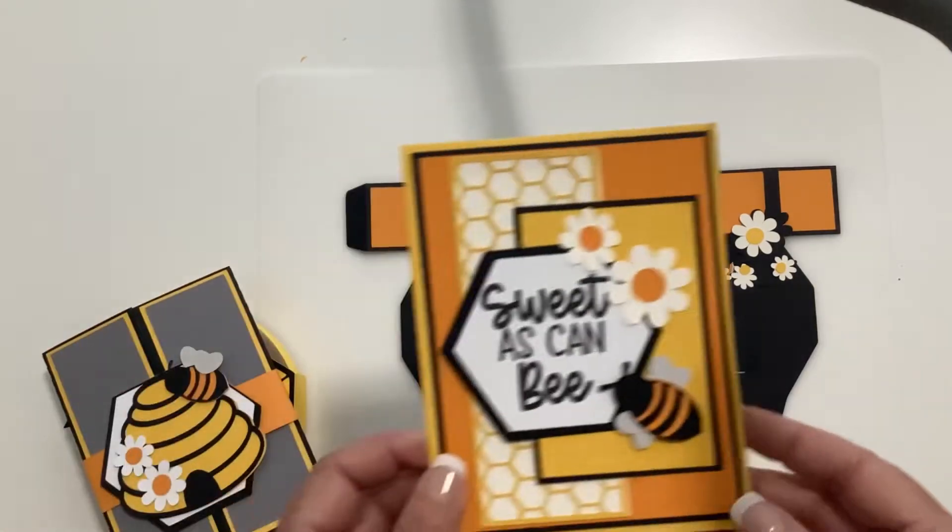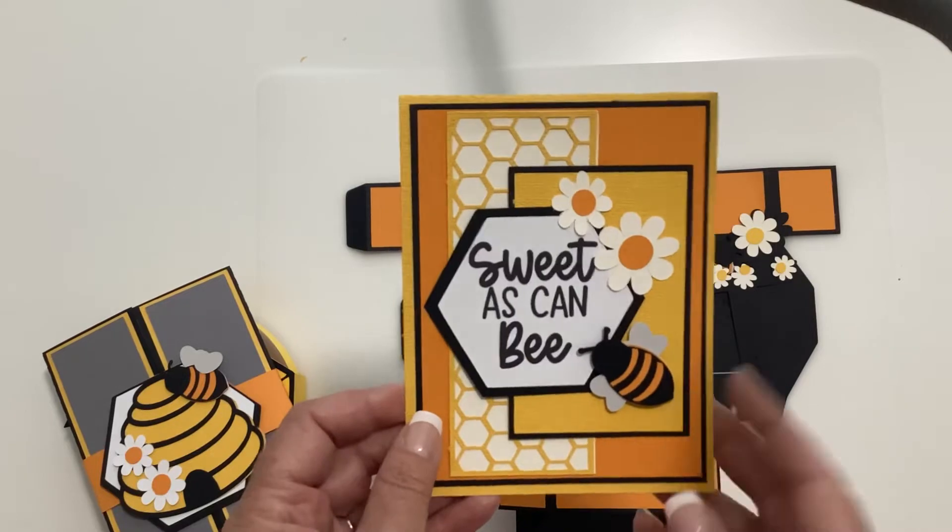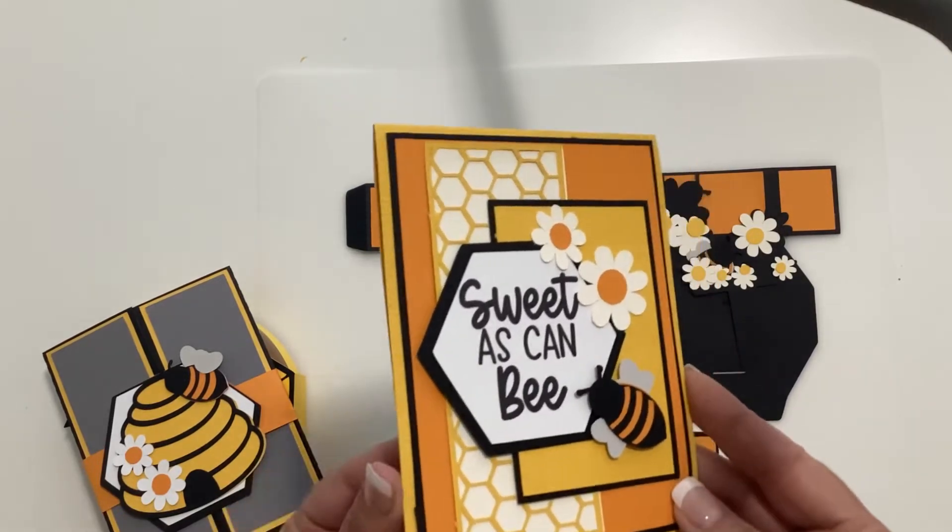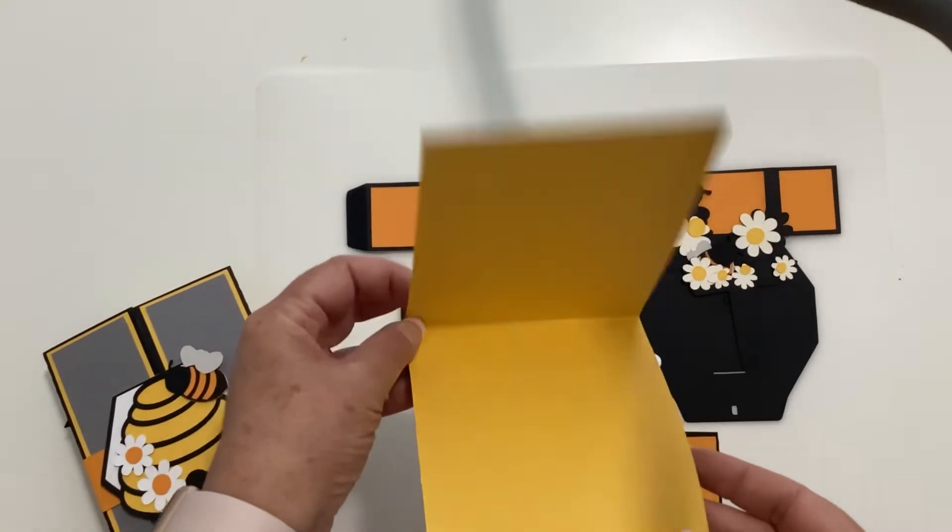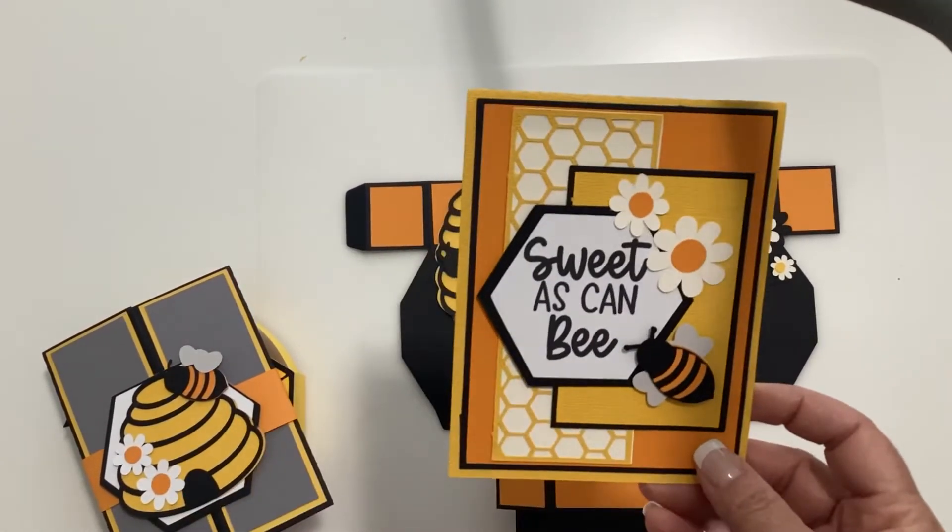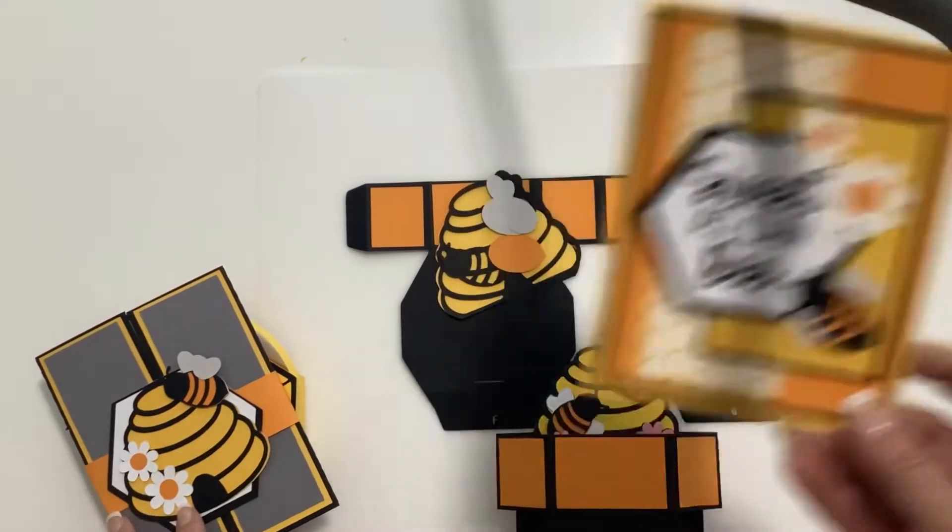Next up is a very simple A2 layered card. This is Sweet As Can Be. It is also a vertical card so it opens up from the bottom. And this file does come with the printable Sweet As Can Be or you can leave it blank and put your own in.